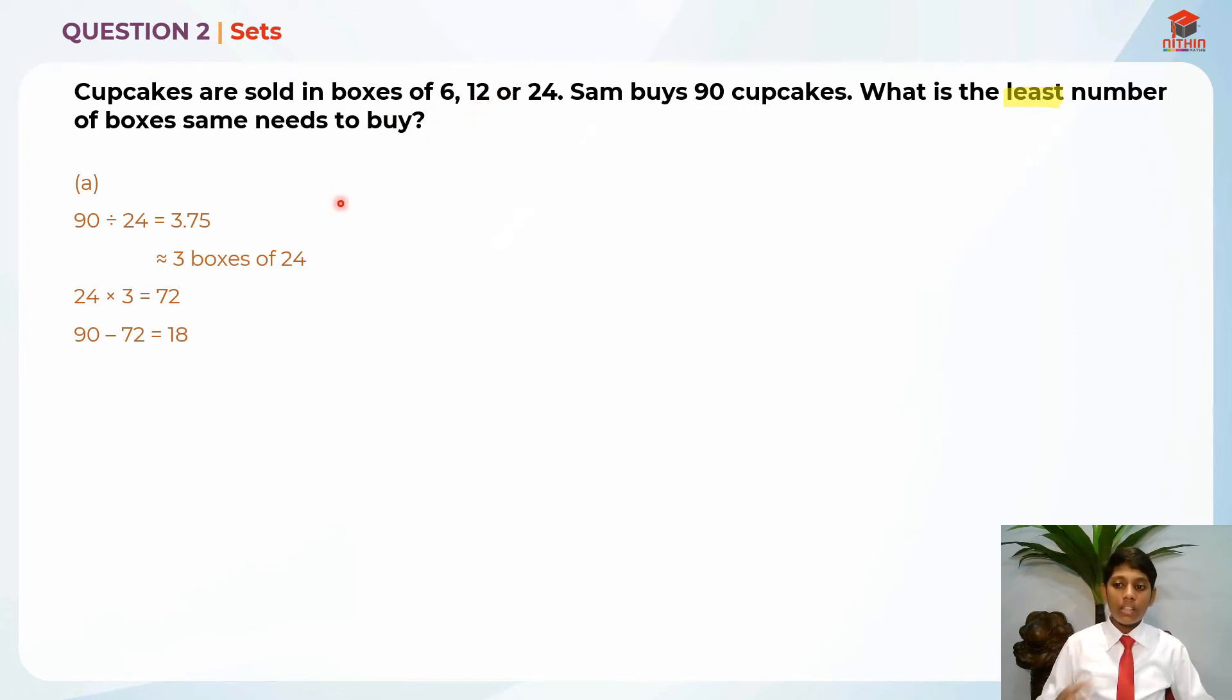We all know that 18 is a multiple of 6. 6, 12, 18. So we can actually have two 6s which make 12 in one box, and this last 6 can be in a box of 6.